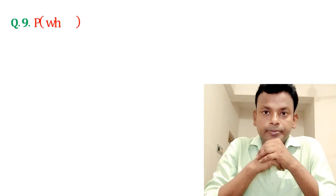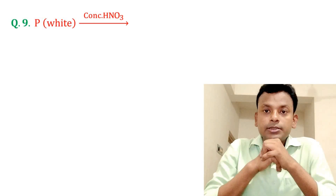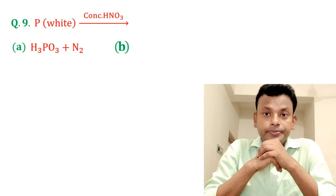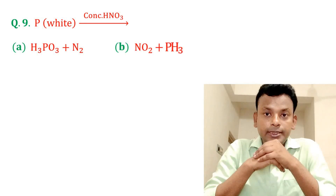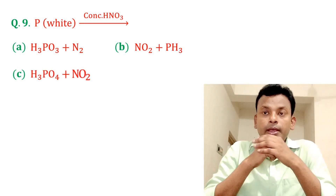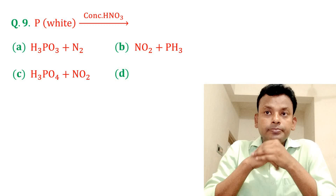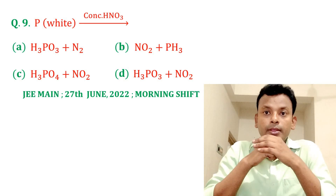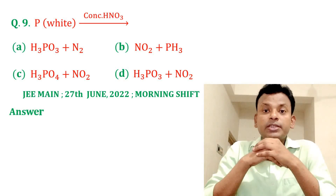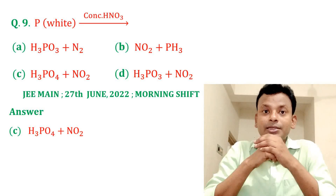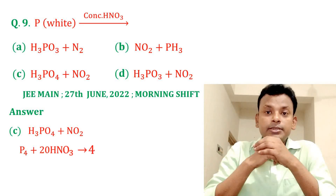Question number nine: white phosphorus reacts with concentrated HNO3. Options A, B, C, and D are given. Answer: option C is correct. The products are H3PO4 plus NO2.